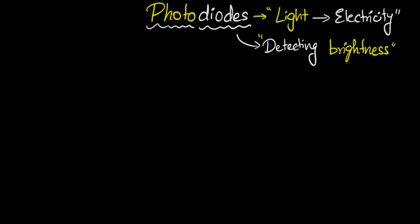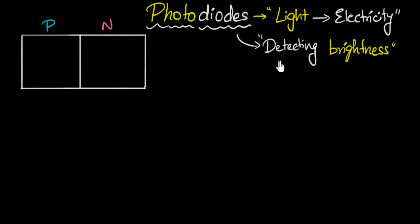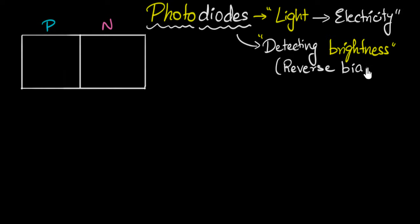Since these are diodes, we'll start with the P-N junction. To make it detect the brightness of light, you have to reverse bias it — and this is super important. We'll see in a while why reverse bias and not forward bias.